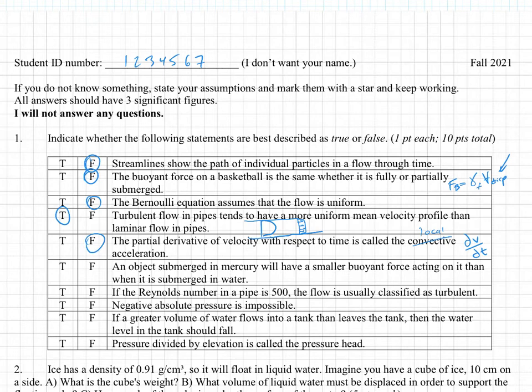An object submerged in mercury will have a smaller buoyant force acting on it than when it is submerged in water. The buoyant force depends on the specific weight of the fluid. If you have a more dense fluid like mercury, it's going to have a larger buoyant force than when it's submerged in water. So this is false.